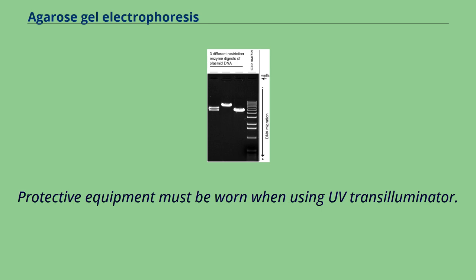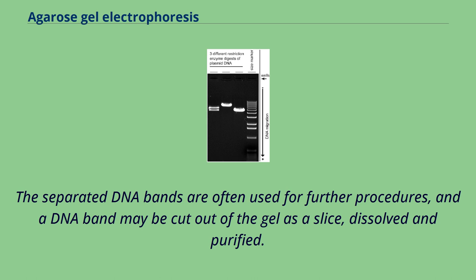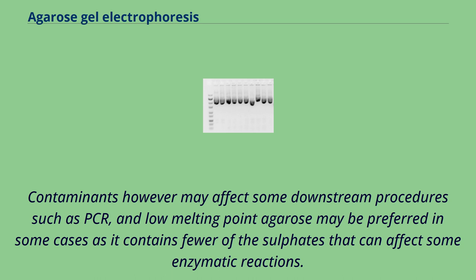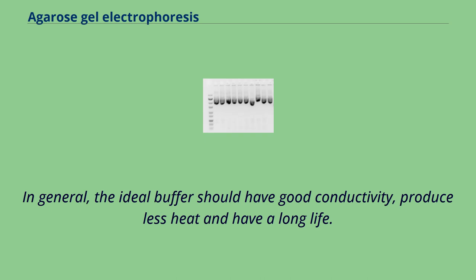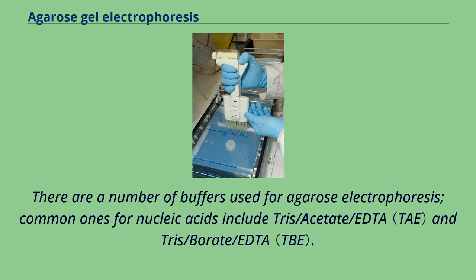The separated DNA bands are often used for further procedures — a DNA band may be cut out of the gel as a slice, dissolved, and purified. Contaminants may affect downstream procedures such as PCR, and low melting point agarose may be preferred as it contains fewer sulfates that can affect enzymatic reactions. The gels may also be used for blotting techniques. The ideal buffer should have good conductivity, produce less heat, and have a long life. Common buffers for nucleic acids include Tris/Acetate/EDTA (TAE) and Tris/Borate/EDTA (TBE).